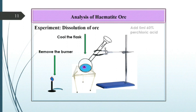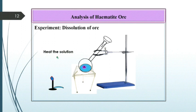Then add 5 ml of 60% perchloric acid to the same solution. Now heat the solution again till white dense fumes start evolving.